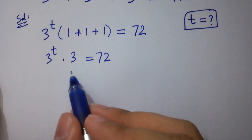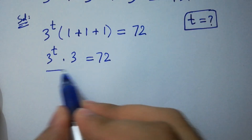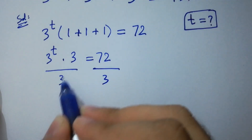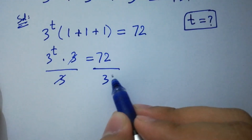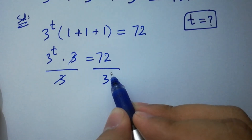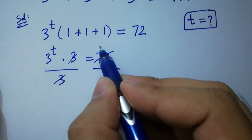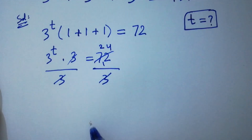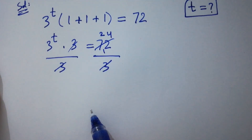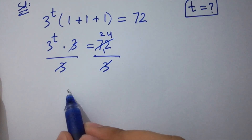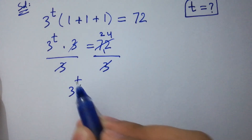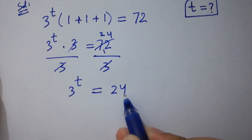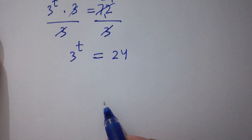To cancel this 3, divide by 3 on both sides. 3 and 3 cancel, and 72 divided by 3 gives 24. Then we have 3 to the power t equal to 24.